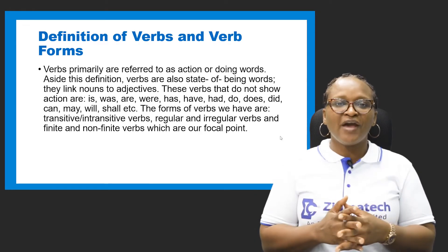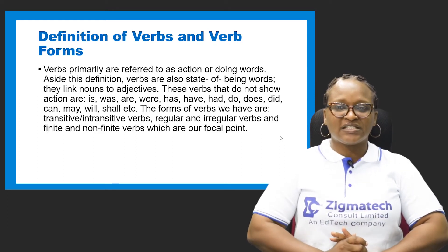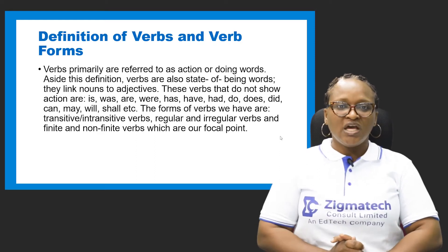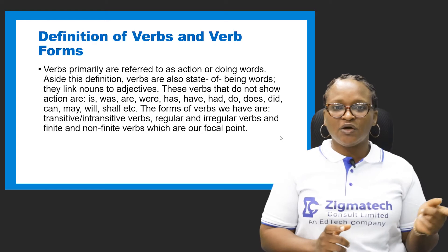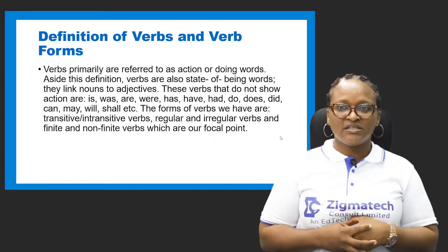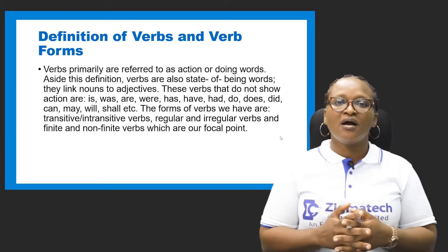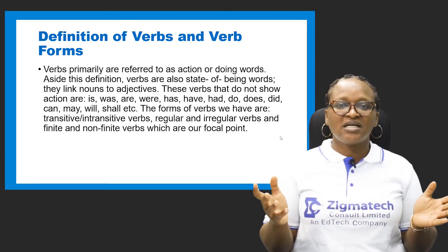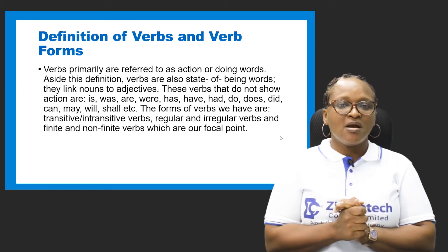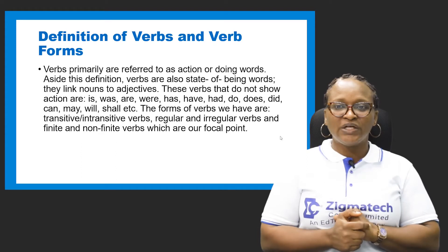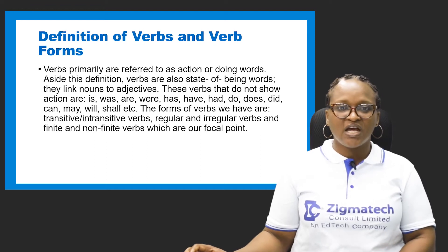What happens to the verb type that has nothing to do with action? Aside from being action words, a verb is also a state of being word. These state of being verbs link the subject to the objects. The state of being words include: is, was, were, had, have, has, may, will, etc. These types of verbs are called auxiliary verbs or helping verbs. Let's not deviate from what we have for today, which is the finite and non-finite verb.